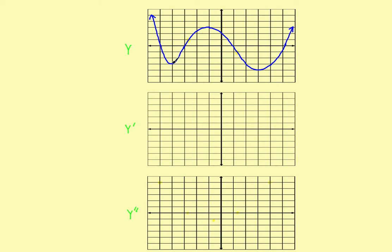The first thing we did was identify the critical points — we found horizontal tangents. There's one right here, which was a critical point. We had a horizontal tangent right here, another critical point. And a horizontal tangent right here — another critical point. So we found three critical points total.